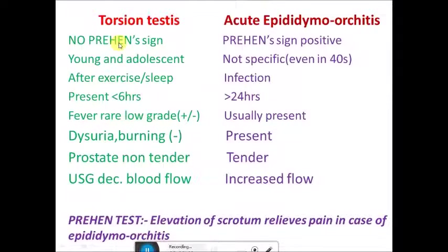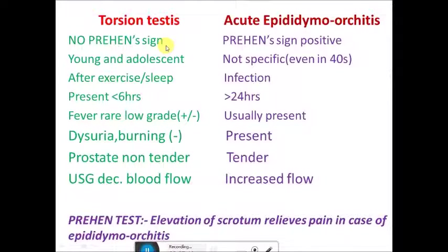The next question is the difference between torsion testes and acute epididymal orchitis. Prehn's sign is very important: when we elevate the scrotum with the palm, there is relief of pain in case of epididymal orchitis, but in torsion it does not relieve — or may increase with elevation. Regarding age: torsion testes usually presents in young adolescents, while epididymal orchitis has no specific age and can occur even in 40-year-old patients.